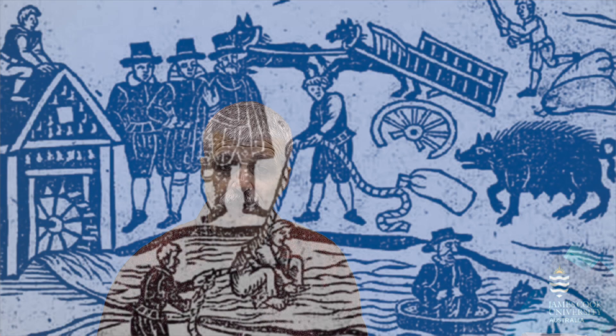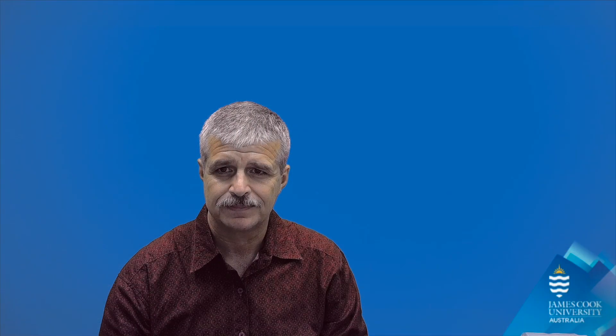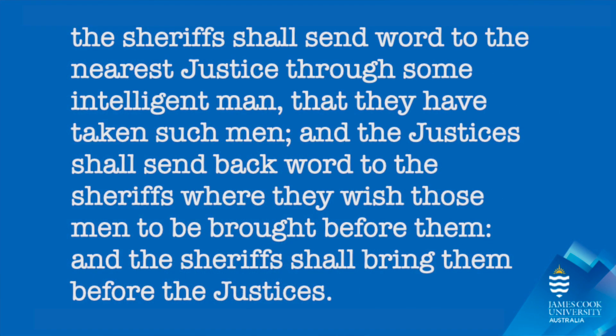One of the powers which the sheriffs had was the power to simply arrest people, hold them in squalid jails and then put them to trial, including trial by ordeal, such as burning or drowning, or trial by combat. Being a sheriff was basically a license to be a public sadist in the king's name. None of this made the king any more popular. And so, in 1167, he passed a series of laws known as the Assizes of Clarendon. Clause 4 of the Assizes read that if the sheriffs arrested a murderer or a robber or a thief, the sheriffs shall send word to the nearest justice through some intelligent man that they have taken such men, and the justices shall send back word to the sheriffs where they wish those men to be brought before them, and the sheriffs shall bring them before the justices.